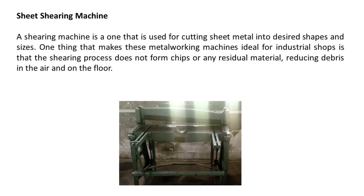Sheet shearing machine. A shearing machine is one that is used for cutting sheet metal into desired shapes and sizes. One thing that makes these metalworking machines ideal for industrial shops is that the shearing process does not form chips or any residual material, reducing debris in the air and on the floor.